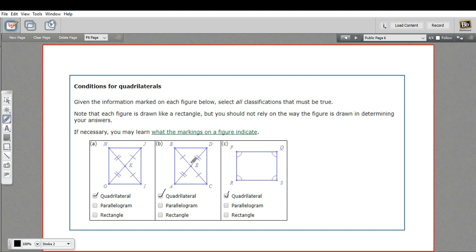This one, however, we do have diagonals that bisect each other. Two hash marks on each side of this diagonal, one on each side of this diagonal. So this looks like it's enough to be a parallelogram.